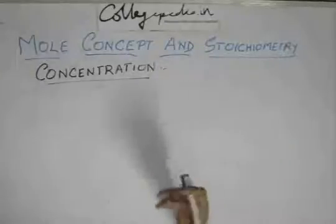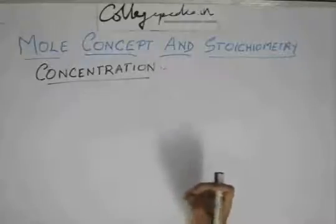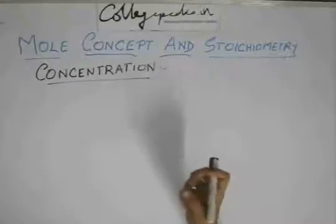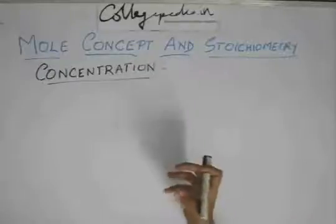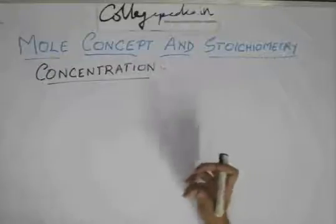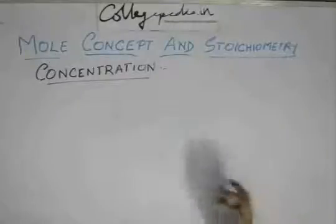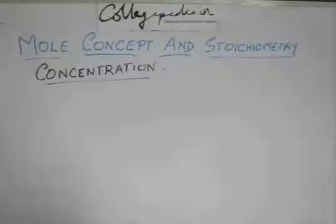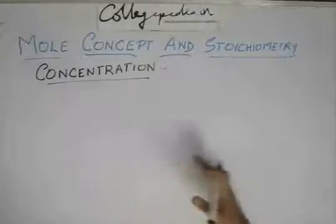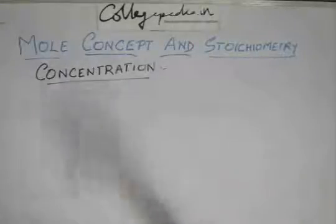We call concentration as the amount of anything present in another substance. That is a very crude definition of concentration. Actually in chemistry, concentration is not just one thing. There are various types of concentration.